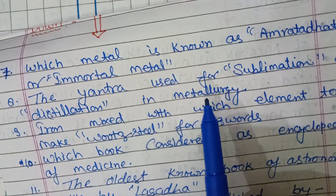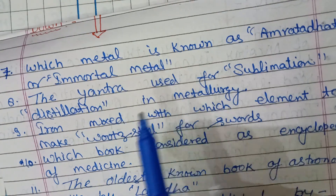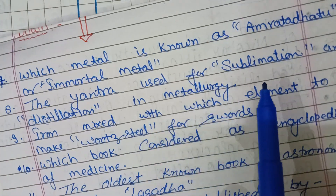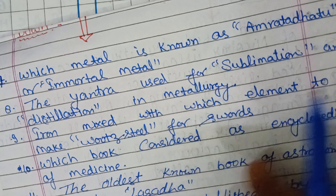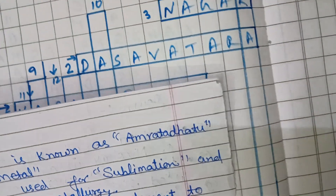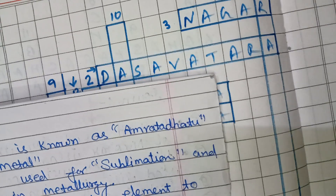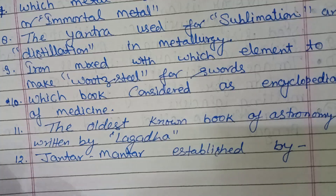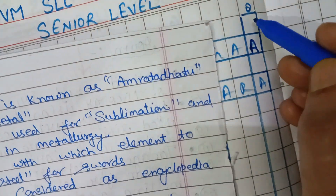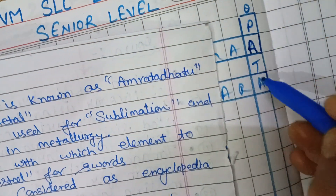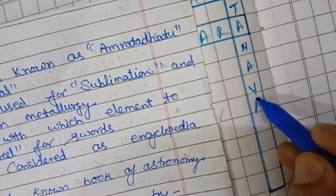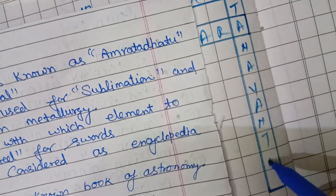Eighth downward: what is the yantra used for sublimation and distillation in metallurgy? This is known as Patanayantra — P-A-T-A-N-A-Y-A-N-T-R-A.